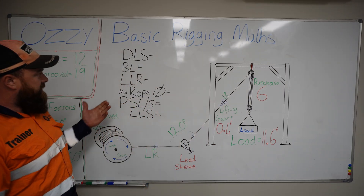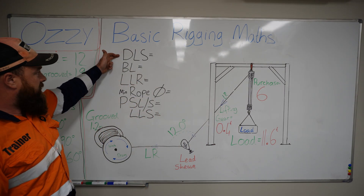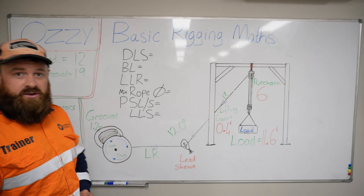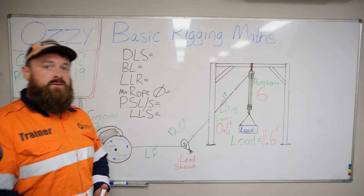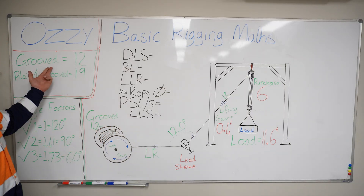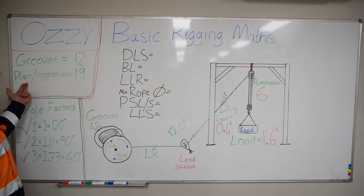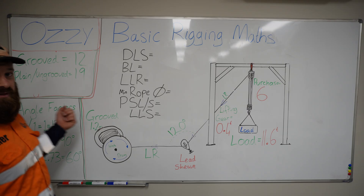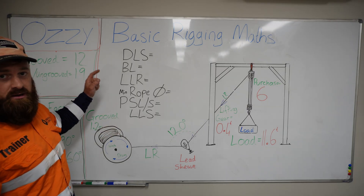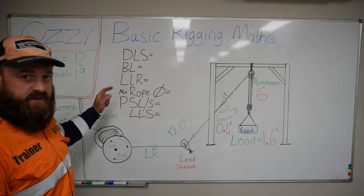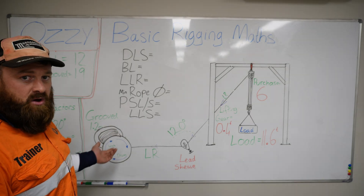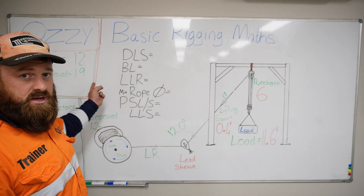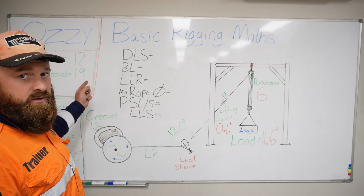Now let's figure out the minimum distance required to our lead sheave from the winch drum. We have two different kinds of winch drums that we need to know about as basic riggers: grooved winch drums and plain winch drums, also known as ungrooved. The magic numbers for those are 12 and 19. Think of 12 as a very groovy number. Think of 19 as a little bit plain Jane. Get those numbers into your head — 12 and 19.